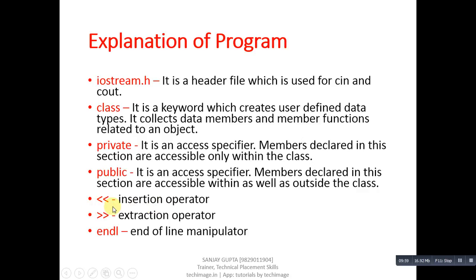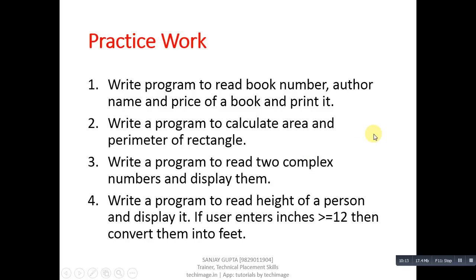Here are some practice programs you can implement: read book number, author name, and price of a book and display it; calculate the area and perimeter of a rectangle; read two complex numbers and display them; and read the height of a person — if the inches entered are greater than or equal to 12, convert them to feet. Implement these programs so you can practice writing C++ code. Thank you for watching this video.